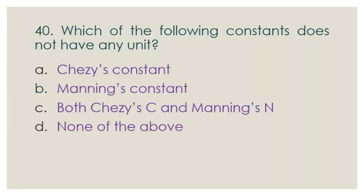Question number 40: Which of the following constants does not have any unit — options: a) Chezy's constant C, b) Manning's constant n, c) both Chezy's C and Manning's n, d) none of them. Manning's constant n has no unit, so option B is the correct answer.